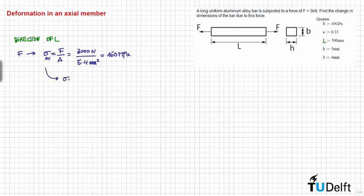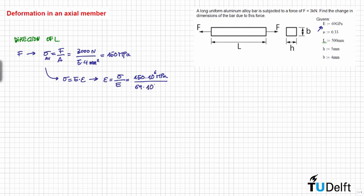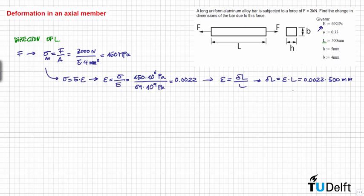We know that the stress is equal to the modulus of elasticity times the strain, so the strain is equal to sigma divided by E. Sigma is equal to 150 MPa, and the modulus of elasticity is equal to 69 GPa, that is 10 to the power of positive 9 Pa. Then this is equal to 0.0022. From here we know that the strain is equal to the increment of L divided by L, so the increment of L is equal to epsilon times L.